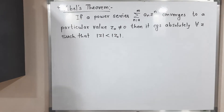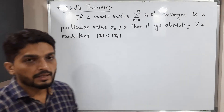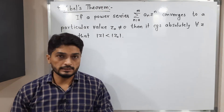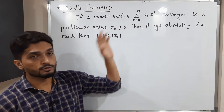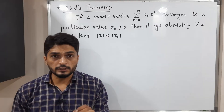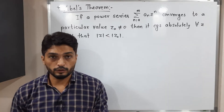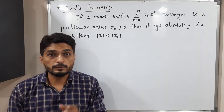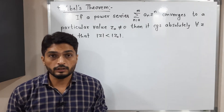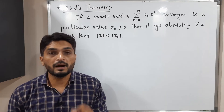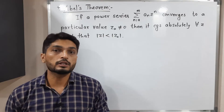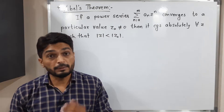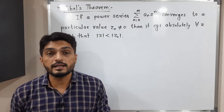Let us discuss Abel's theorem. This theorem says: if you have any power series summation a_n z^n and it is convergent at a particular value z_naught which is not equal to zero, then for any z with mod(z) less than mod(z_naught), the power series is absolutely convergent. We are going to prove this theorem here.